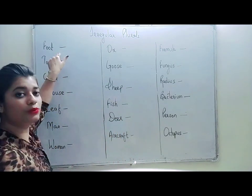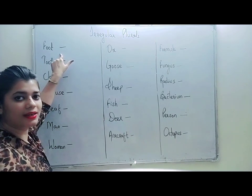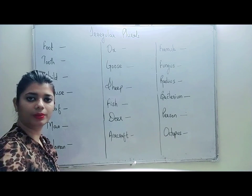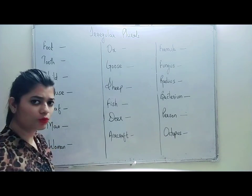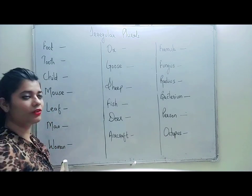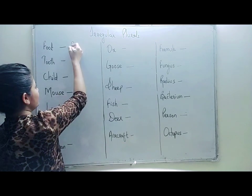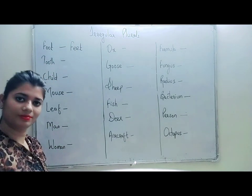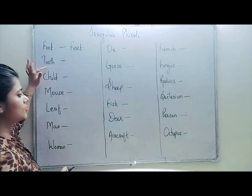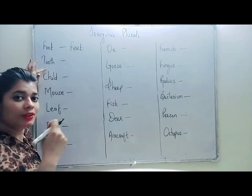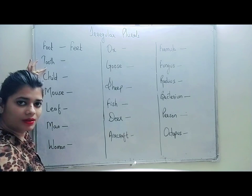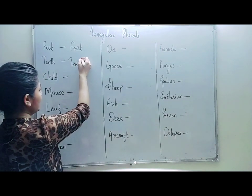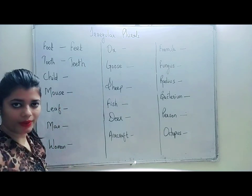The first word is foot. The plural form of foot will not be foots — it will be feet, F-E-E-T. The second word is tooth. The plural form of tooth will be teeth, T-E-E-T-H.